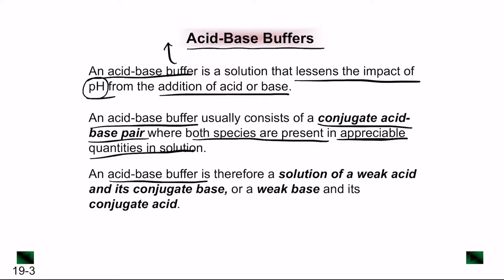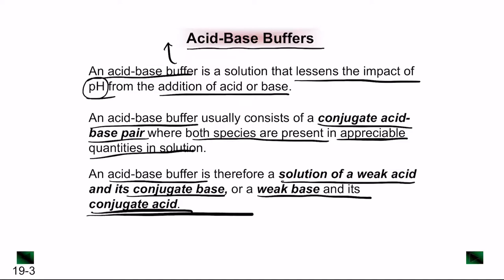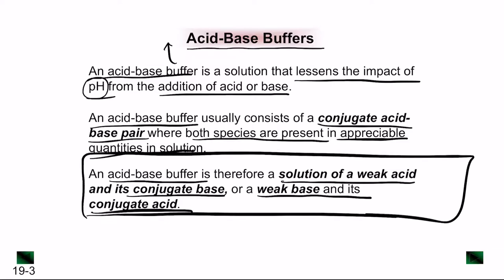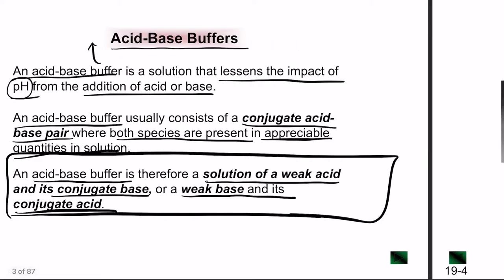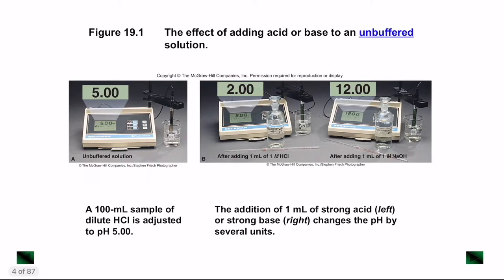An acid-base buffer is generally a solution of a weak acid and its conjugate base, or a weak base and its conjugate acid. Remember this important point: acid-base buffers are always a solution of a weak acid and its conjugate base or a weak base and its conjugate acid. Let's take an example of an unbuffered solution and a buffered solution.